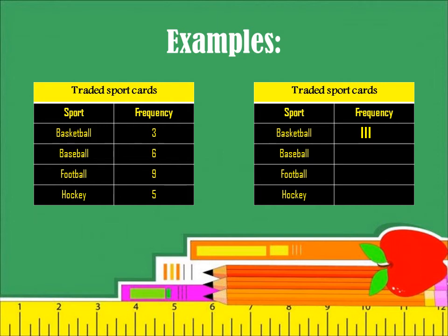Then we have baseball. It's 6. We put 1, 2, 3, 4. But the 5th one is a diagonal, so whenever we see this sign it means it's number 5. And that's the 6th.